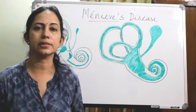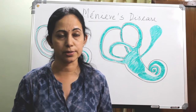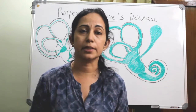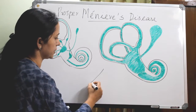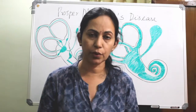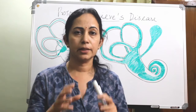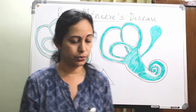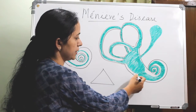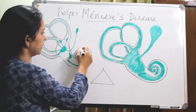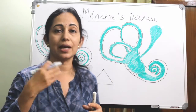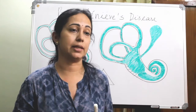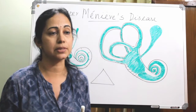Meniere's disease was first described by a French otologist called Prosper Meniere in 1861, and it is a symptom complex. Due to various causes, the endolymphatic system becomes distended until it bursts. When it bursts, the endolymph mixes with the perilymph, causing ionic imbalance. Because endolymph is high in potassium and calcium, this mixing causes ionic disturbances which produce symptoms.